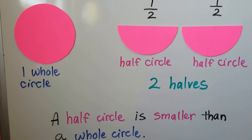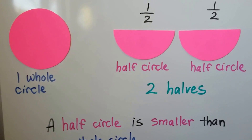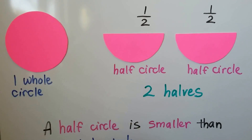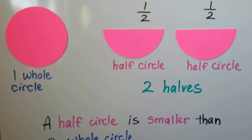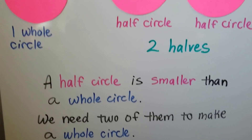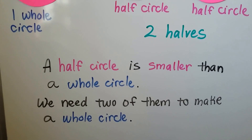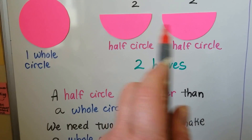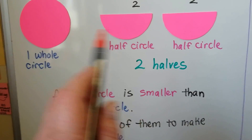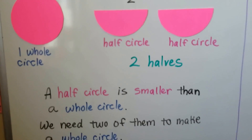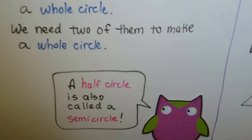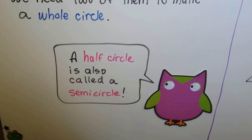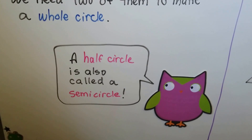A half circle is smaller than a whole circle. This half circle right here is smaller than that whole circle. We need two of them to make a whole circle. These two halves make that whole. And a half circle is also called a semicircle — that's another name for it.